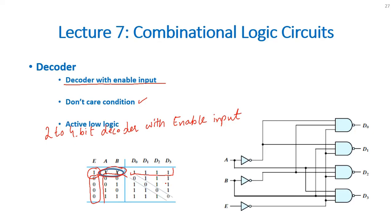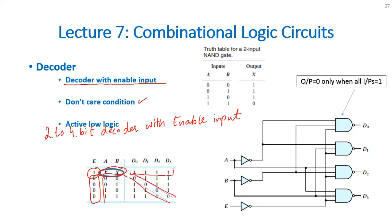This type of decoder is actually active low logic because you can see that the respective output will remain 0 and all other outputs will remain 1. This is the active low logic of the decoder.